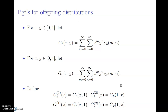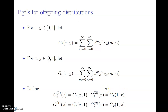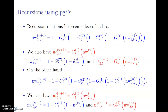We need to define the probability generating functions corresponding to the offspring distributions. One is for the offspring distribution conditioned on the parent vertex being blue, and the other is conditioned on the parent vertex being red. We also define quantities where one of the arguments in these functions is set equal to one, purely for convenience of notation. Basically, the idea is that you come up with recursions, and you have to sit down and work them out.